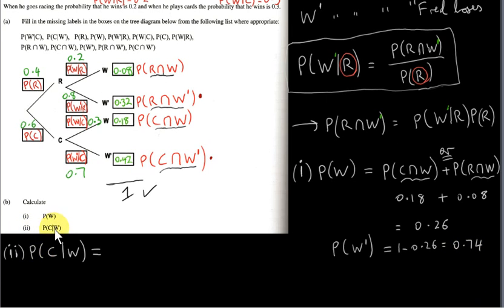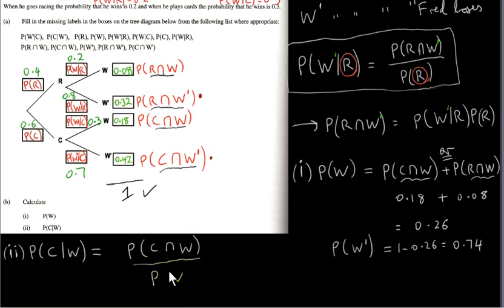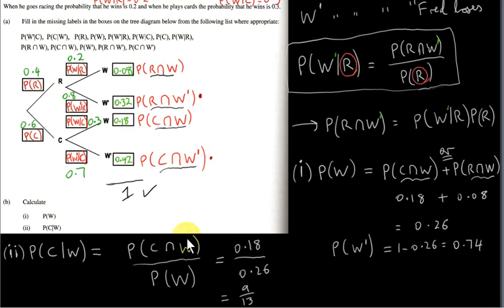In part 2, we want to find the probability that he plays cards, given that he wins: P(C|W). Using the conditional probability formula, P(C|W) = P(C∩W) / P(W) = 0.18 / 0.26 = 18/26 = 9/13.